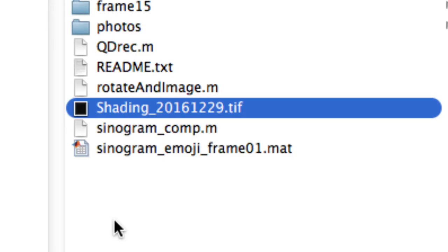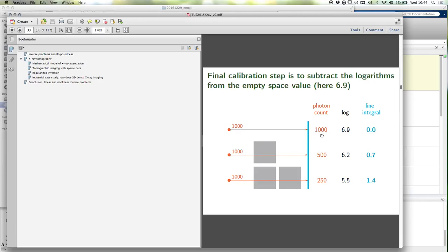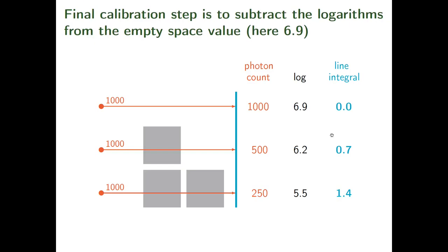This background image is also called dark field image sometimes. If there are no questions about that, we also have another image called shading — sometimes also called flat field. This is actually what we saw earlier measuring through empty space, because we need this empty space measurement to calibrate the measurements that go through the material.